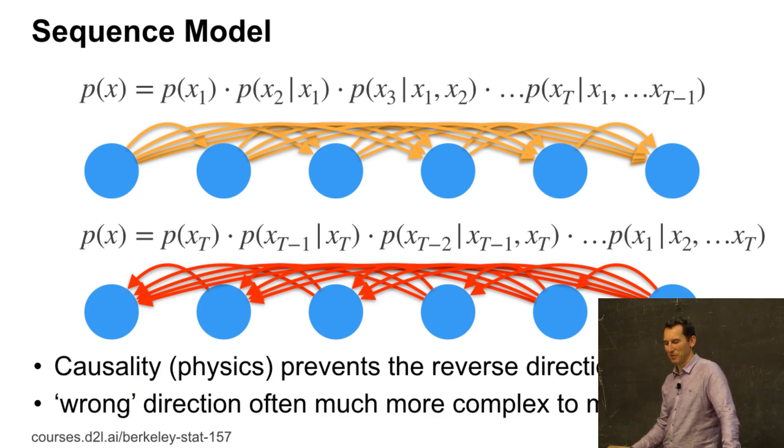Causality, in other words reality, usually prevents the reverse direction. So the future doesn't affect the present or the past, unless you watch sci-fi movies where they travel back from the future. And that's why we're not going to see time travel.